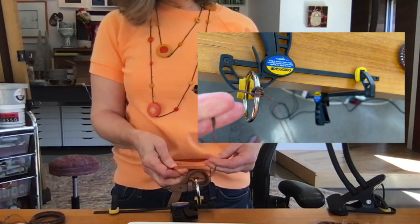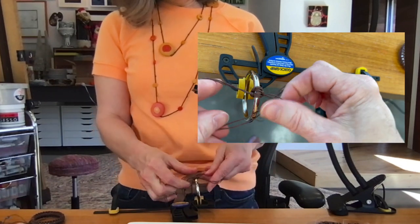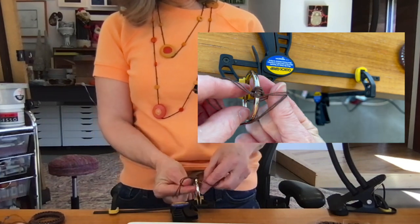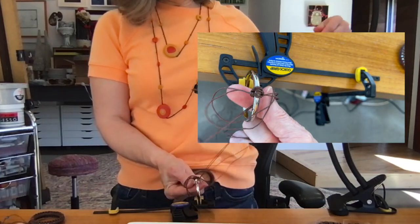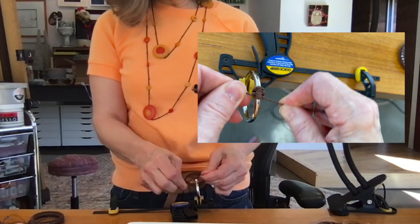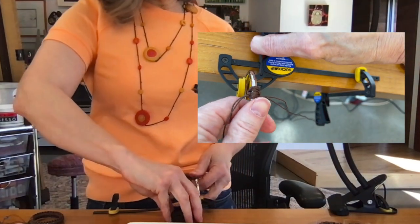This time it is left string over the top of the ring, the right string over that string, under the ring, and through the loop on the other side. Eventually, you'll fill the whole ring, and I have one finished.